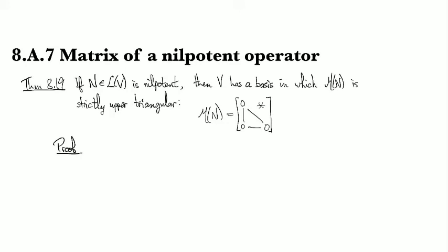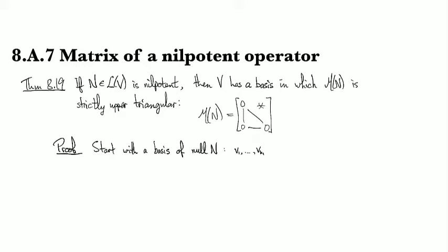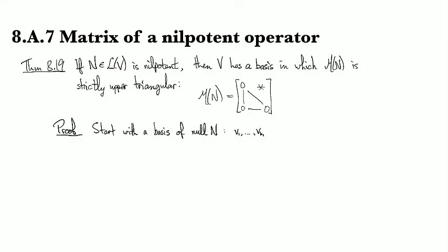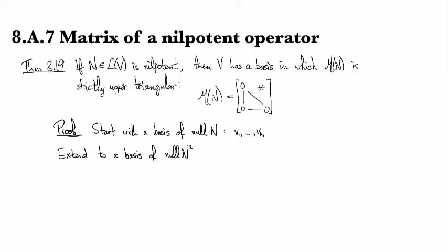But let's see. Let's see how we go. Okay, so we're going to follow the proof in the book pretty closely. So let's start with, we're going to build the basis and then show that the basis gives us a matrix of the nice form. So we're going to start with a basis of the null space of N. And so this will be V1 up to some point VK1.